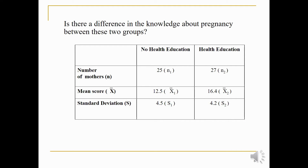The question is: is there a difference in knowledge about pregnancy between these two groups? Group one, which did not receive health education, has a mean score of 12.5 and a standard deviation of 4.5. Group two, which received health education, has a mean score of 16.4 and a standard deviation of 4.2. We have two independent populations, and we have 25 samples from each group.